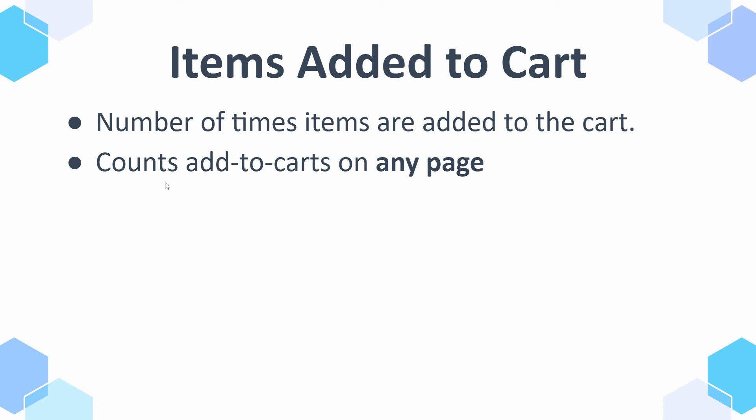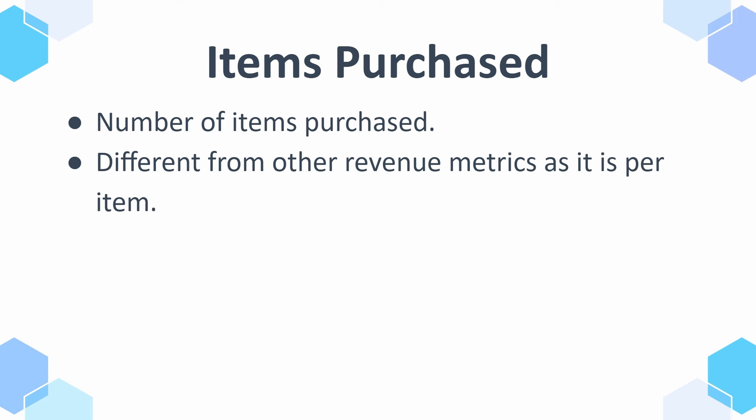Items added to cart counts on any page — so even if you have add to cart on the product page, homepage, lister page, or in your cart, it will always count those add to carts as long as you've set up tracking for all those different pages. Then we have items purchased, which is different from other revenue metrics in that it's per item — per product. Then we have item revenue versus total revenue — item revenue is for individual items and total revenue is for all of them together.